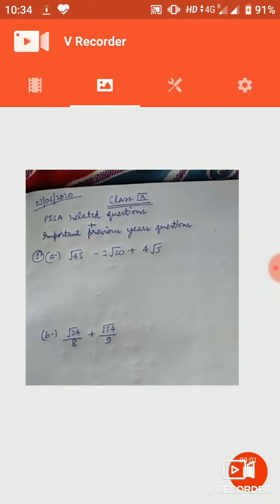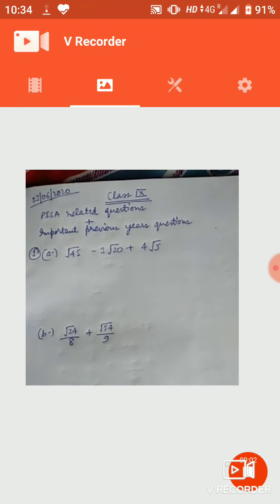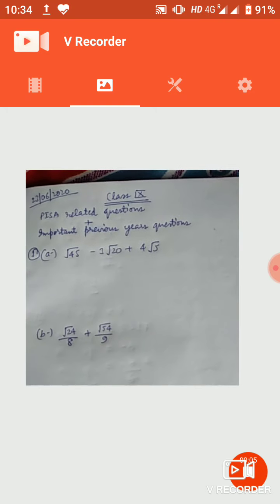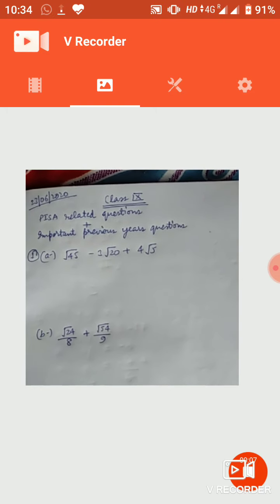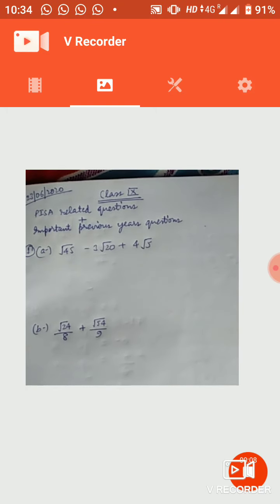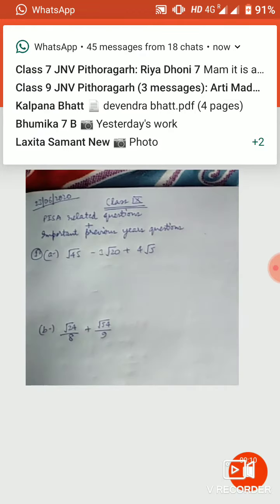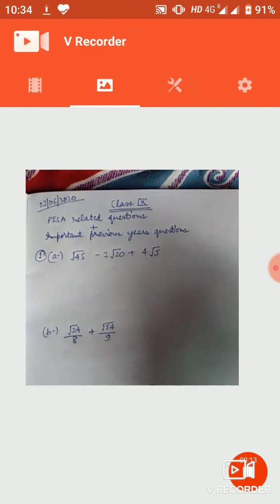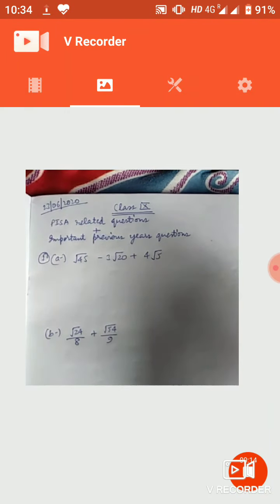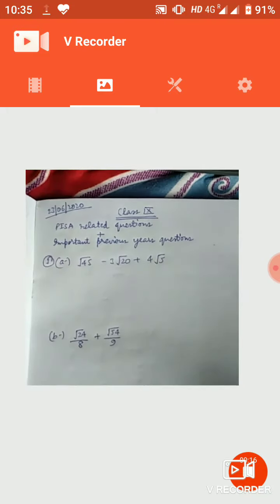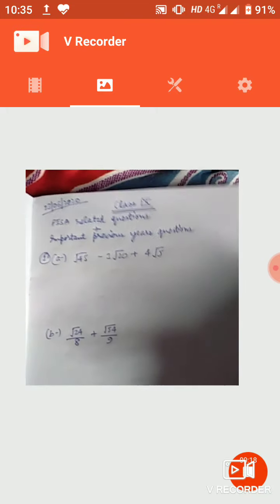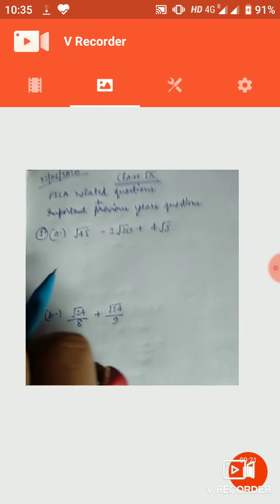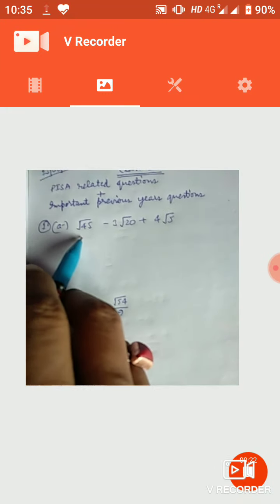Good morning, Class 9. Today on 23 June 2020, we will discuss some questions which are for the purpose of PSAP test and important previous years questions — these are a combination of them. First question: simplify √45 minus 3√20 plus 4√5.